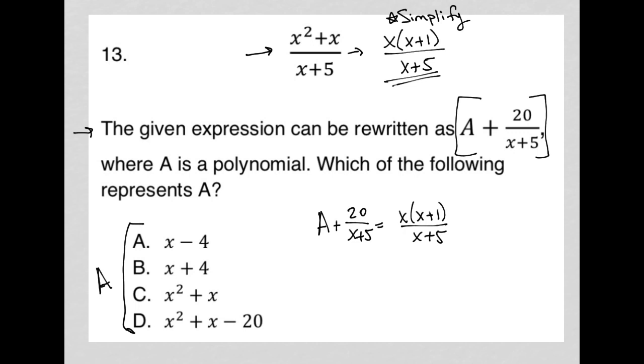What I'm actually going to do is solve for A. I'm going to take this and move it over. Maybe I'm going to change my mind on using my simplified version. I don't think it matters, but I'm going to keep it as the original. So x squared plus x over x plus 5. I'm going to subtract 20 over x plus 5 from both sides.